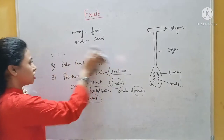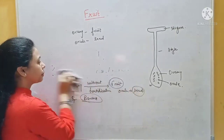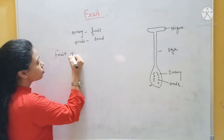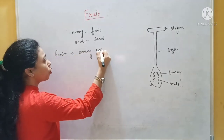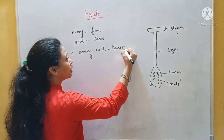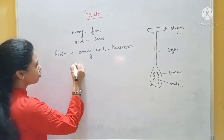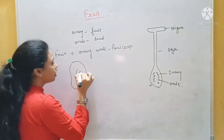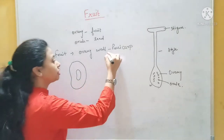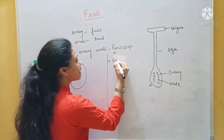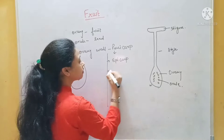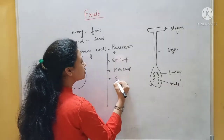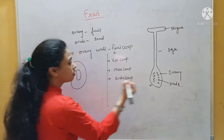Now let's see the fruit structure. This is a classification. If you see the fruit structure, in the fruit the outermost ovary wall is called the pericarp — you can understand it as the covering. If I make a diagram of mango, you can see it. Now, there are three structures in this pericarp. The first is called the epicarp, then mesocarp, and the third one is endocarp.